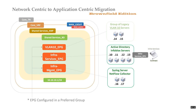So I'm going to create an infra services contract and an infra management contract. Based on the application dependency mapping tools or strategy, I know what ports are needed for communication with the Active Directory and Infoblox servers, and what ports are needed for syslog and the NetFlow collector.